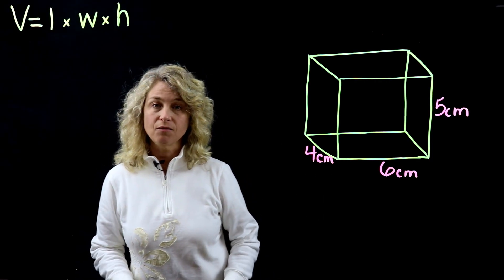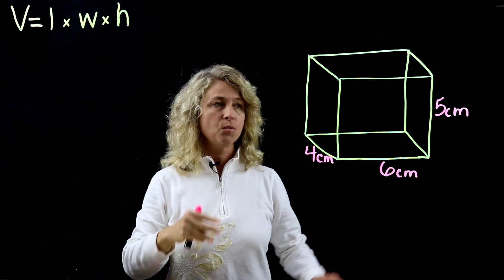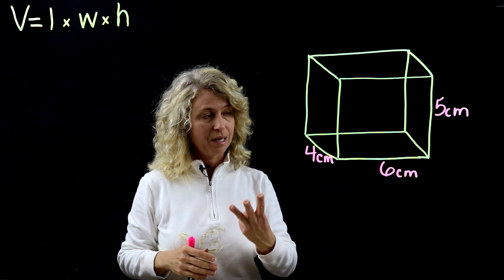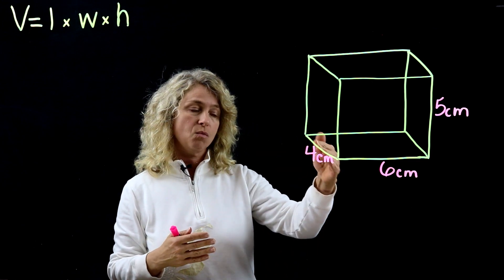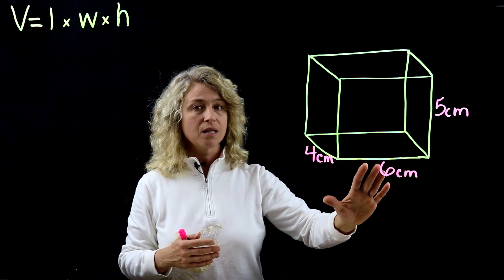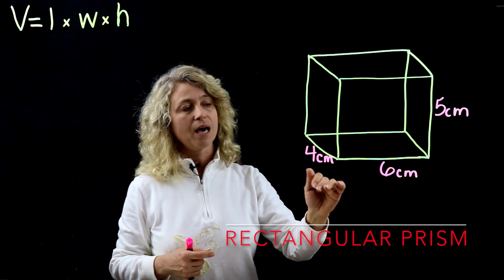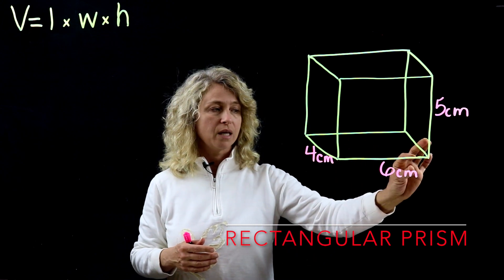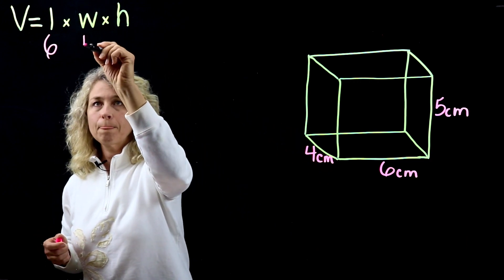Today we're going to learn about volume. Here is our formula for volume: length times width times height. When you look at a box, you notice automatically that there are three dimensions — it's not just a flat figure. You can see the depth and the width. Keep that in mind with volume. These shapes are called rectangular prisms, and you can see that they have width to them.